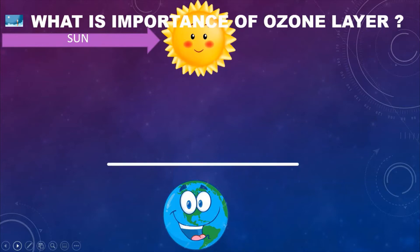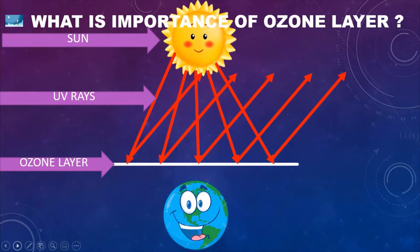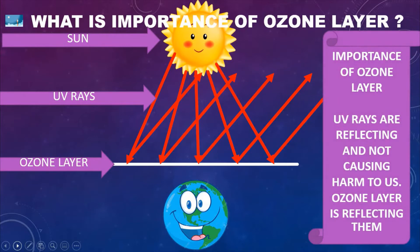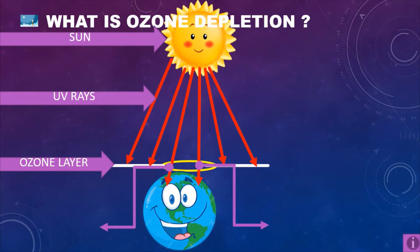The white line that you are able to see is the ozone layer. The red arrows are the UV rays — ultraviolet rays — which are very harmful to us. They are reflecting back, and that is the importance of the ozone layer: UV rays are reflecting and not causing harm to us. The ozone layer is protecting us.